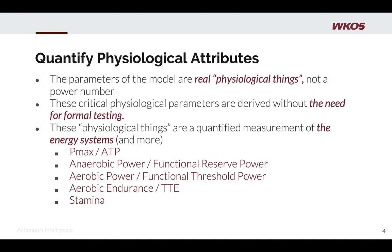The physiological parameters of the model are derived — you don't need any formal testing. It's modeled off your power data. You don't need to go into a lab, strap on a mask, or take a blood test. You simply utilize your data to get an excellent estimate of these underlying physiological things. These physiological things help us quantify the measurement of the energy systems we're tracking. Pmax helps measure your ATP; anaerobic power relates to your functional reserve power; aerobic power relates to your functional threshold power; and aerobic endurance relates to your time to exhaustion. We can also measure STAMMA within the system.